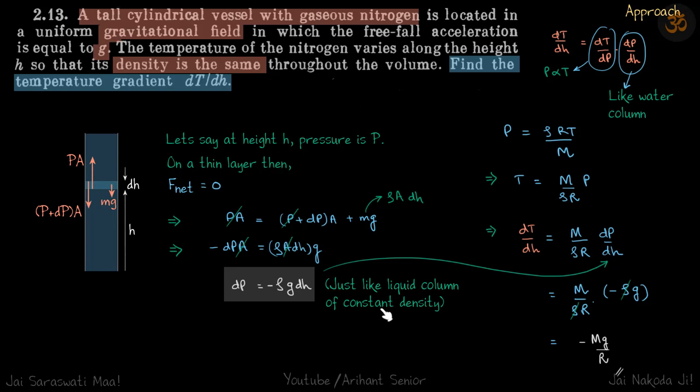Actually it need not be constant density also. So this rho should be the rho at that layer. Now in this question it's given that density is constant throughout, but otherwise also this is a general formula. Just like liquid column of density rho at height H, so this rho can be variable. In this question however density is constant.